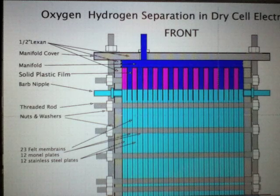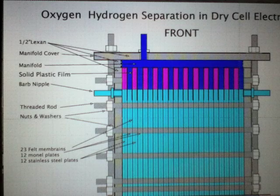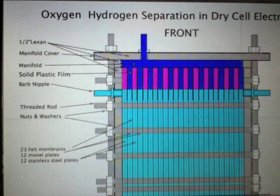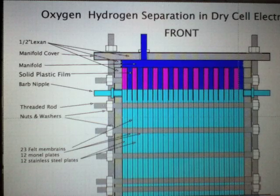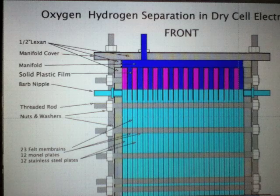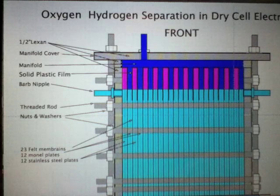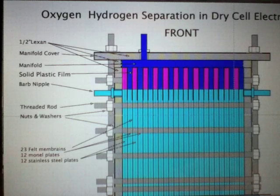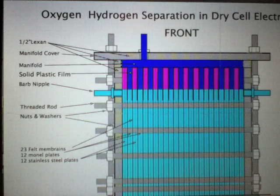This blue down here, this light blue, this is your electrolyte. And up here what we've got is we have your individual little cells separated with polyester felt. You have a plate of stainless steel, a plate of felt, and then a plate of monel. You just alternate stainless steel and monel.